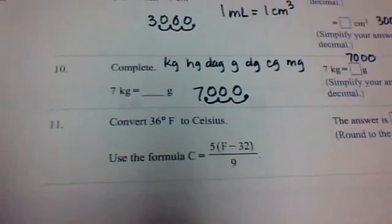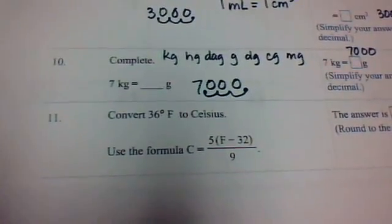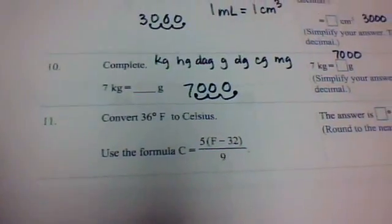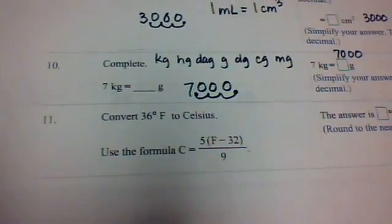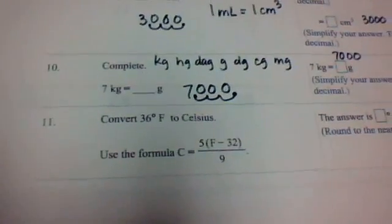Take a look at number 11 in homework of section 13.5, where you want to convert 36 degrees Fahrenheit to Celsius, and you use the formula C equals 5 times (F minus 32) divided by 9.